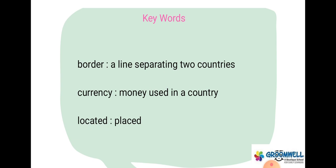Border — a line separating two countries. Currency — money used in a country. Located — placed.